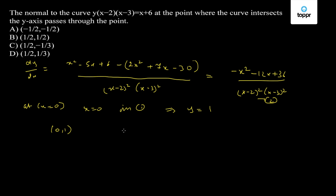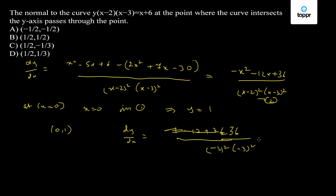The derivative at this point: dy/dx = 36 / ((-2)²(-3)²) = 1. So the slope of the normal will be equal to -1/( dy/dx) = -1.